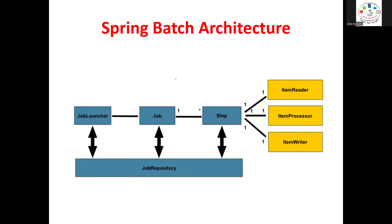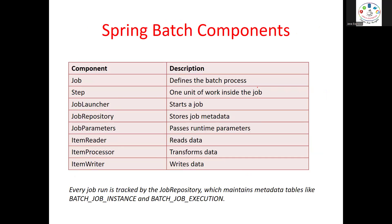Now let's look at the Spring Batch architecture. There are many components: Job Repository, Job Launcher, Job, Step, Reader, Processor, and Writer. One step may have many executions. It can be difficult to understand just by looking at the architecture diagram, so we will spend time on each component — what is Job Launcher, what exactly it does, what is a Job, how to create and execute one, and how to handle failures.